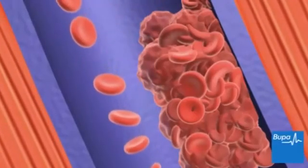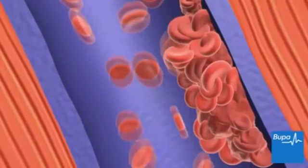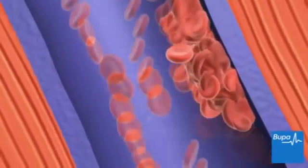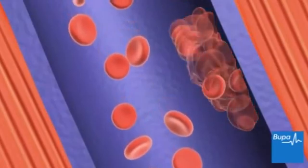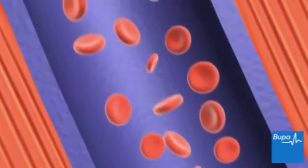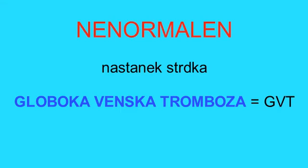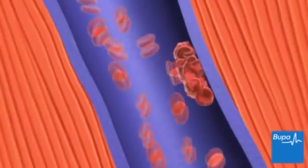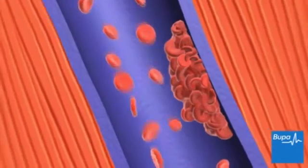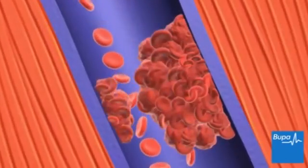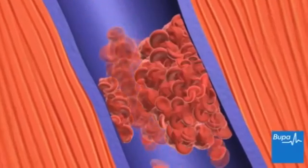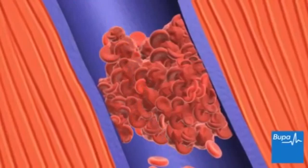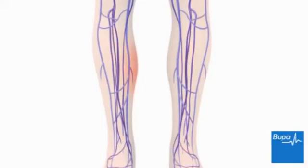Many blood clots are small and your body will usually be able to gradually break them down. Here we show a small blood clot being broken down and blood flow through the vein returning to normal. Sometimes a larger blood clot can form, completely blocking the flow of blood through the vein. A large blood clot may cause pain and swelling in the affected leg.